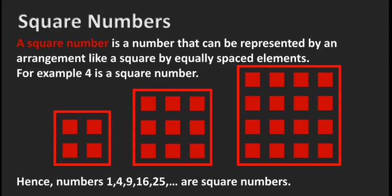These numbers are squares of natural numbers 1, 2, 3, 4, and 5. Specifically: 1 is the square of 1, 4 is the square of 2, 9 is the square of 3, 16 is the square of 4, and 25 is the square of 5.